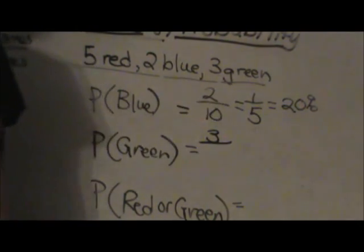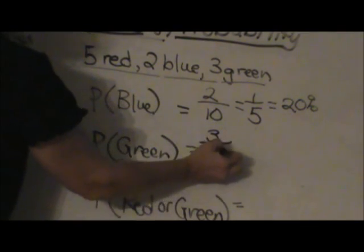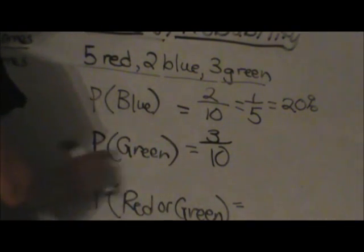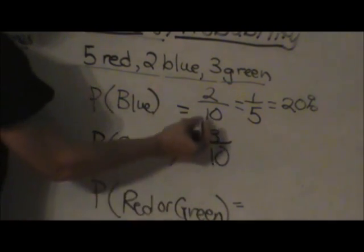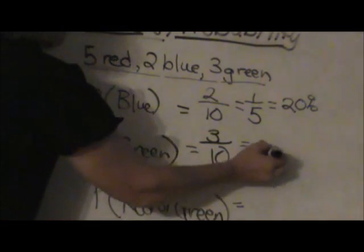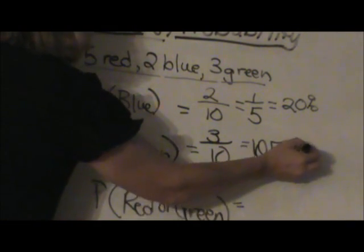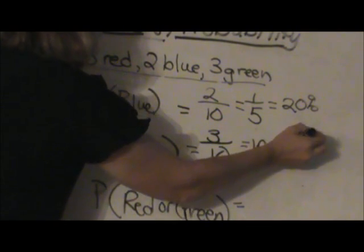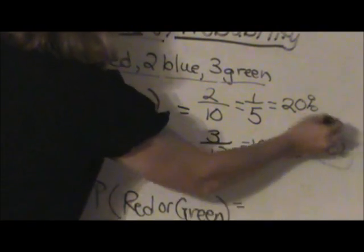Well, I add all of my marbles up. Five plus two plus three adds to ten. So my probability is three tenths and if I convert that to a percent, all I do is divide and that would come out to, let's see, ten into three. Add my decimal and that's point thirty which is thirty percent.